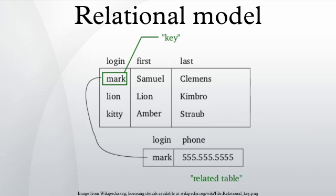In the relational model of a database, all data is represented in terms of tuples, grouped into relations. A database organized in terms of the relational model is a relational database. The purpose of the relational model is to provide a declarative method for specifying data and queries. Users directly state what information the database contains and what information they want from it, and let the database management system software take care of describing data structures for storing the data and retrieval procedures for answering queries.